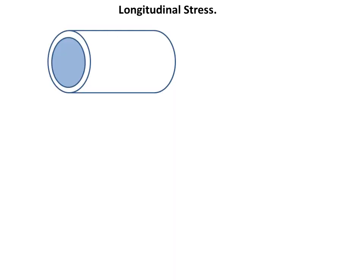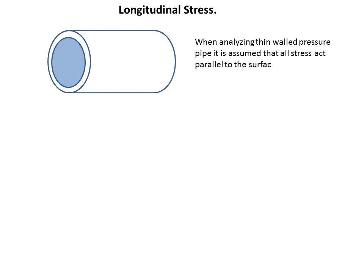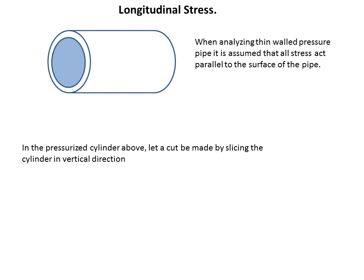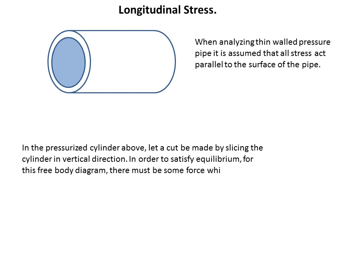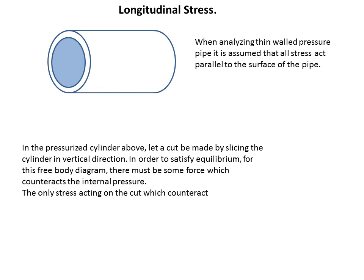We will start with the discussion on longitudinal stresses. When analyzing thin-walled pressure pipe, it is assumed that all stresses act parallel to the surface of the pipe. In the pressurized cylinder, let a cut be made by slicing the cylinder in the vertical direction. In order to satisfy equilibrium for this free-body diagram, there must be some force counteracting the internal pressure. The only stress acting on the cut which counteracts the internal pressure is the normal stress SL — the longitudinal stress.